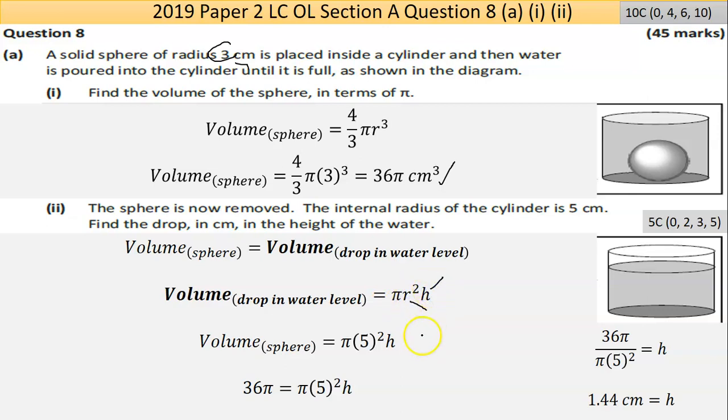The water drop is given by the formula for volume of cylinder πr²h. The radius is 5, the height we don't know. We do know the volume is 36π. So 36π equals π times 5² times h. I bring the π5² over, put that through the calculator and I get 1.44 centimeters.